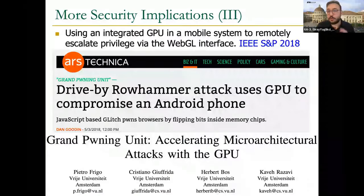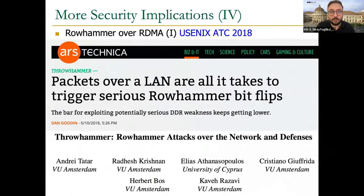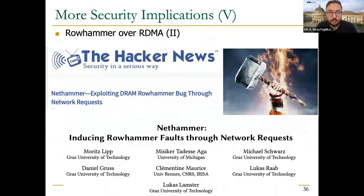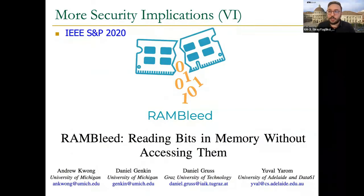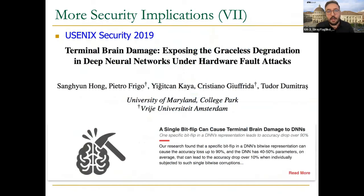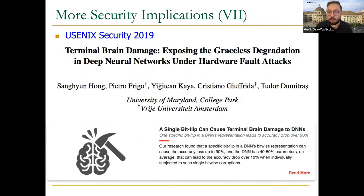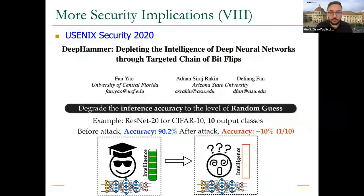In the literature, it has been experimentally demonstrated that you can induce rowhammer bit flips using JavaScript code, on mobile systems, using GPUs, using network packets, and via remote direct memory accesses. Rowhammer bit flips can be used not only to take over a system, but also to leak data without being noticed, change parameters of critical applications, and for example reduce the accuracy of a deep neural network.